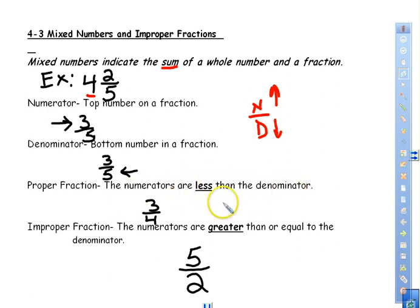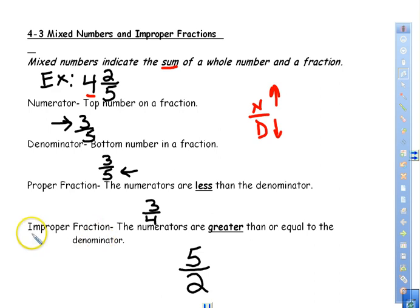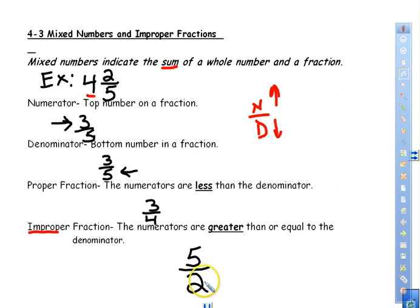A proper fraction is one where the numerator is less than the denominator — the top number is smaller than the bottom. An improper fraction means the numerator is greater than or equal to the denominator, so the top number is larger than the bottom. That is the improper way of writing it; a proper fraction is the proper way.